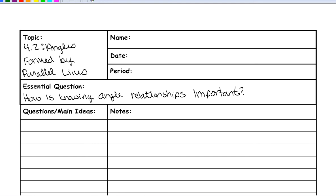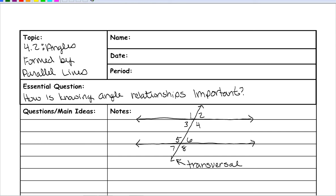First you need to know what kind of angles we're looking at. Here is an example of two parallel lines cut by what we call a transversal. This line right here is the transversal. Because of the two parallel lines and this transversal, we actually have eight different angles in this picture.